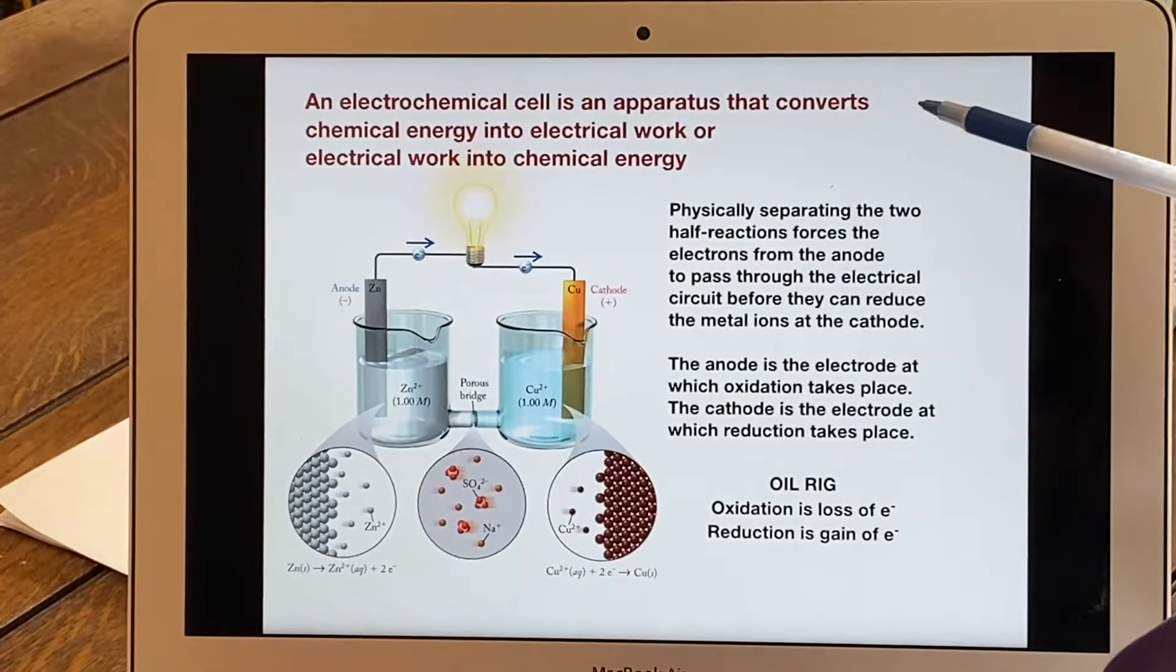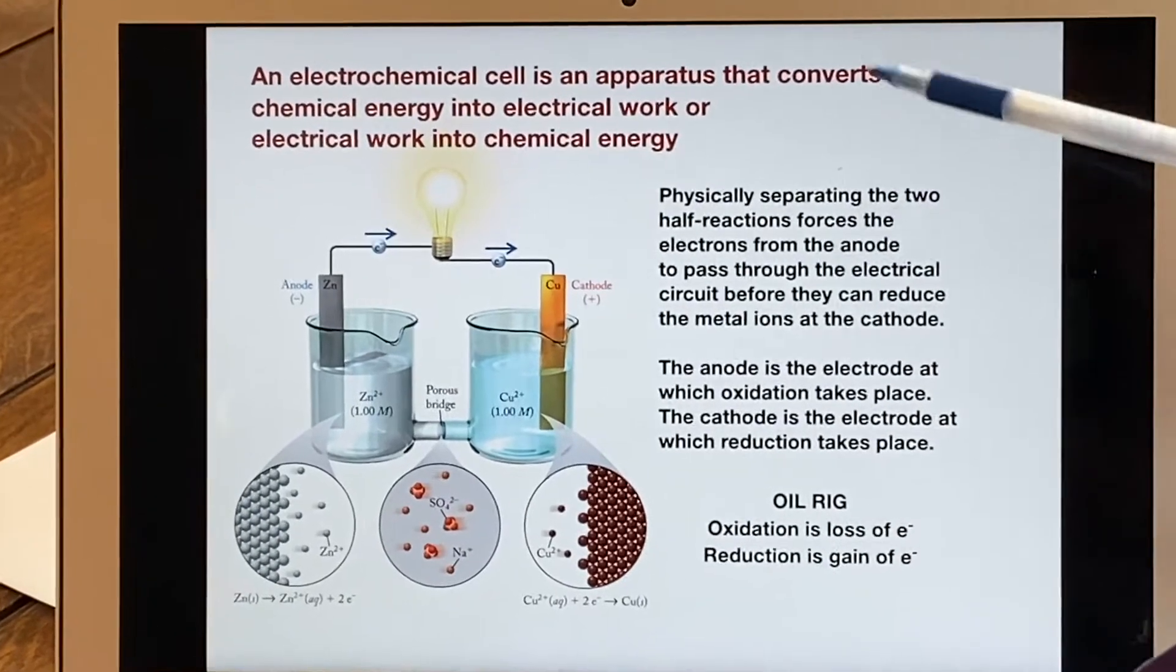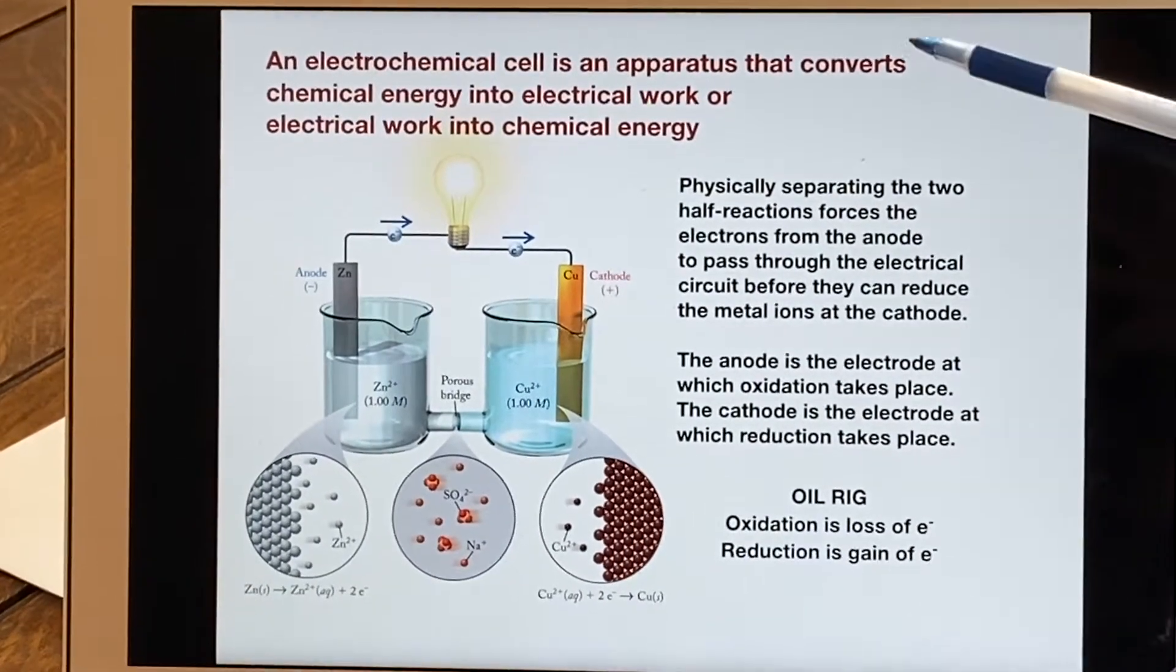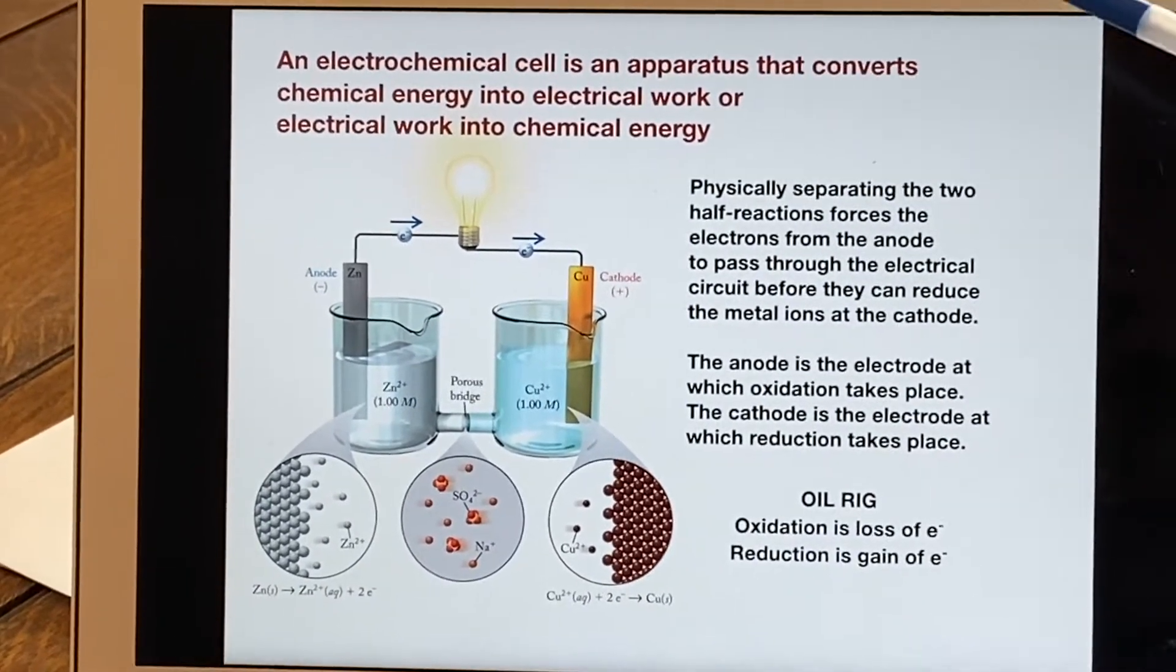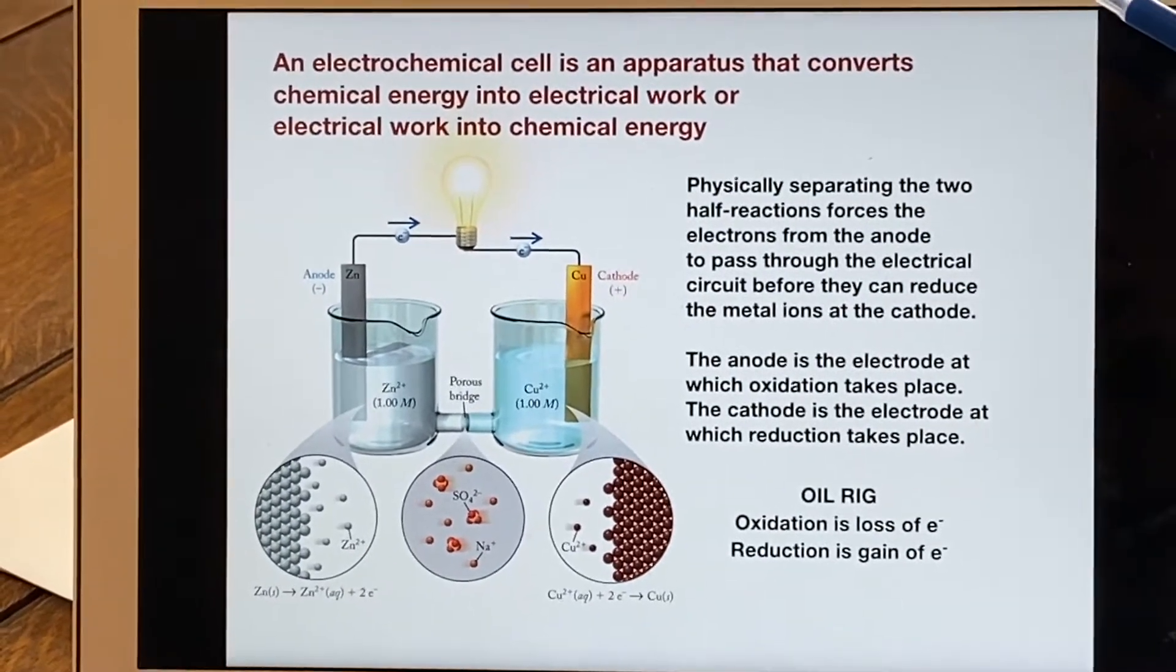What we term an electrochemical cell is a device that's put together so that we can either change chemical energy into electrical work or electrical work into chemical energy.